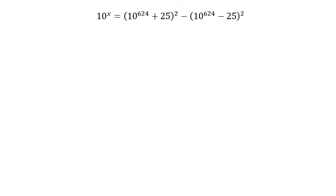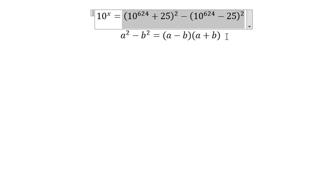We have a² - b² equals (a - b) multiply with (a + b). So we will apply this formula in this situation. You will get 10^624 + 25 minus 10^624 + 25.